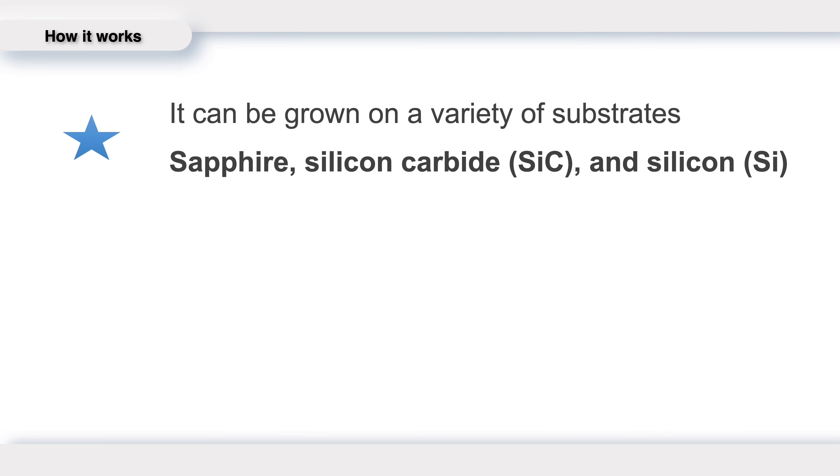Furthermore, it can be grown on a variety of substrates, including sapphire, silicon carbide, and silicon. So it can achieve higher efficiency, higher power density, or even both after replacing silicon components with GAN components.